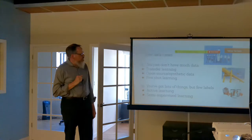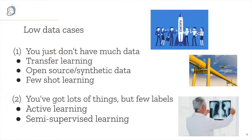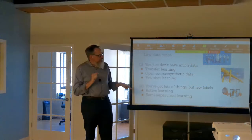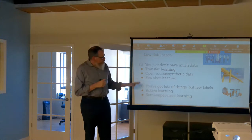Here's what we're going to cover. In the 'you just don't have much data' case, we'll talk about transfer learning — the default way of attacking problems these days, especially in machine vision. We'll talk about finding or creating data, and few-shot learning for when you really only have three examples of the things you're trying to learn about. Then in the 'lots of things but few labels' case, we'll cover being smart about which examples to ask a human to label, and taking advantage of all those unlabeled things using algorithms.